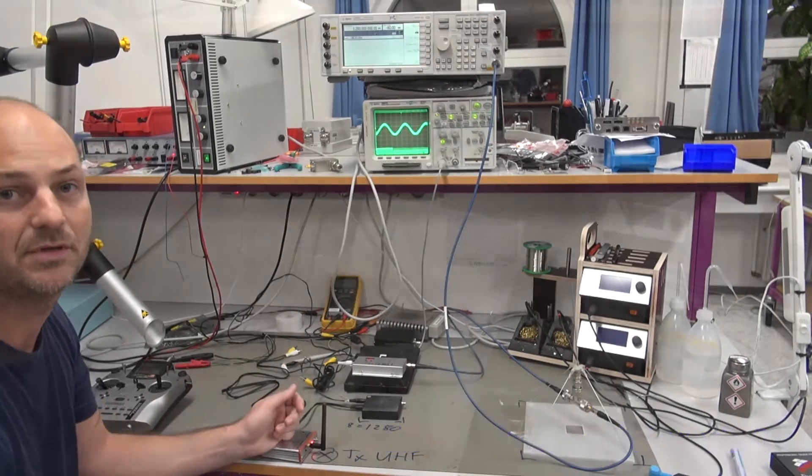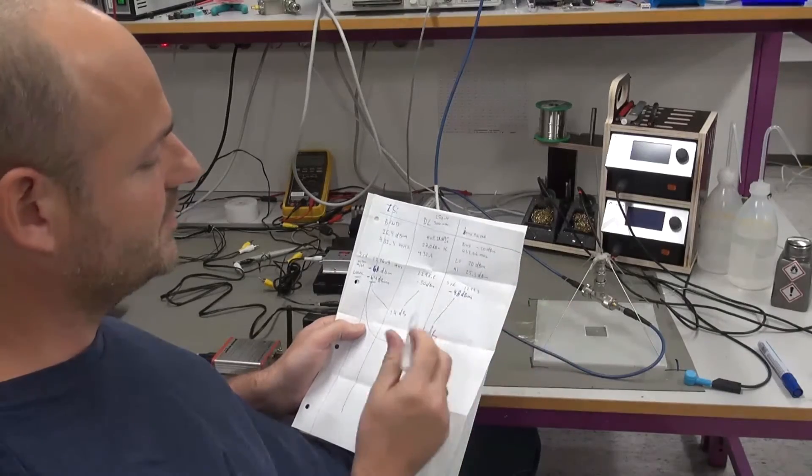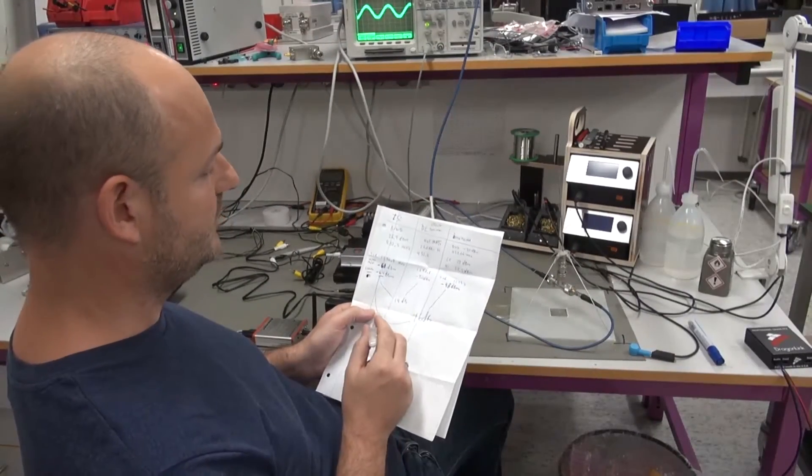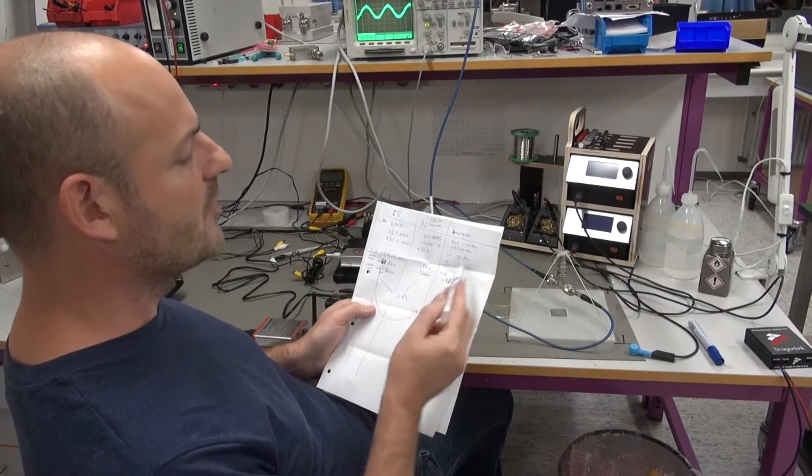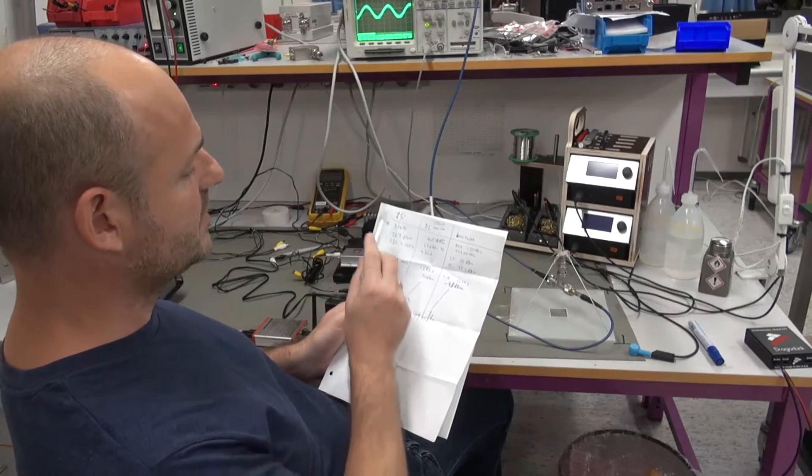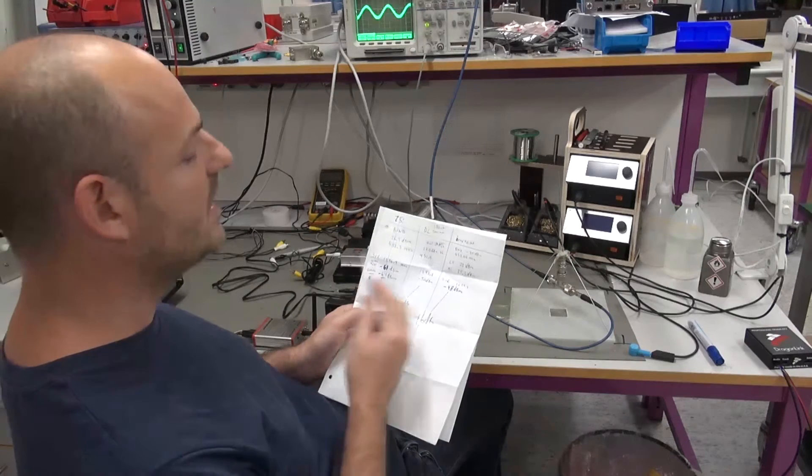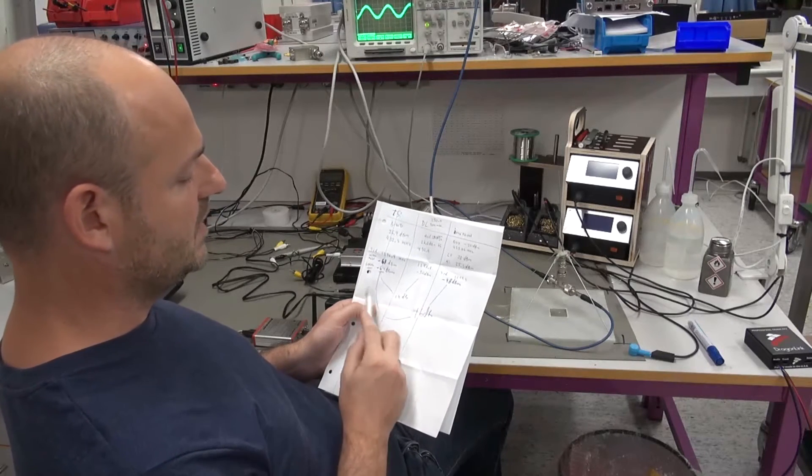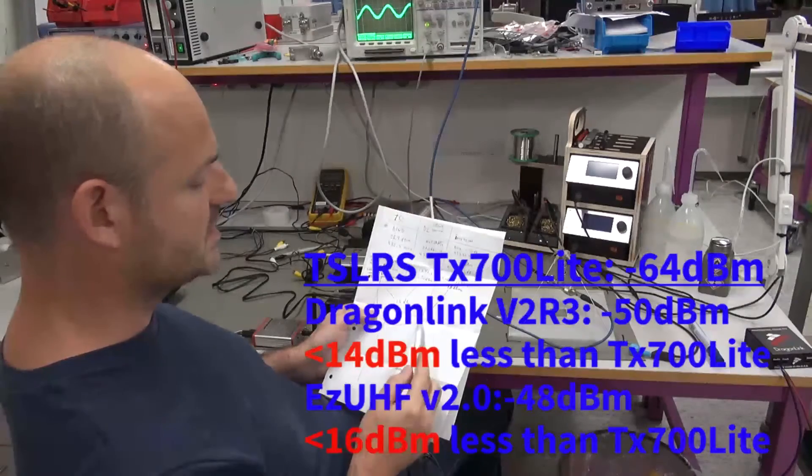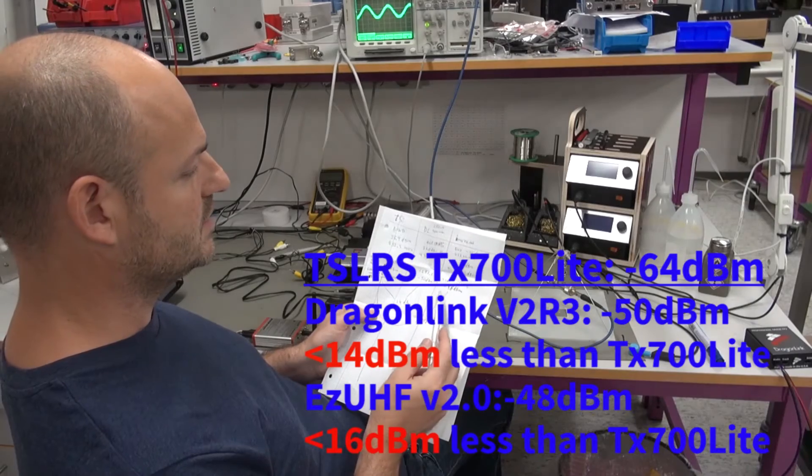All right guys, I'm sorry about this bad handwriting. This is just a very fast resume of all we have tested today about the third harmonic. Again, we found the ThomasShare system was the best on harmonics. The level of the harmonics is 14 dB better than the Dragon Link and 16 dB better than the Immersion system, the EZ system.